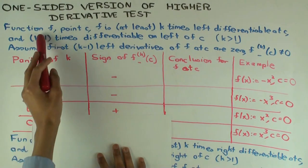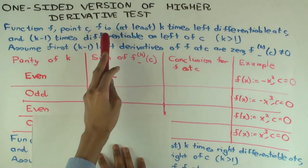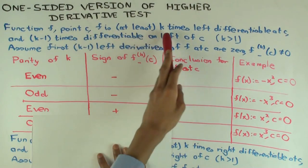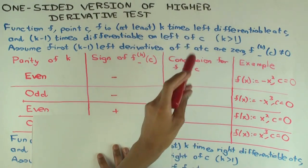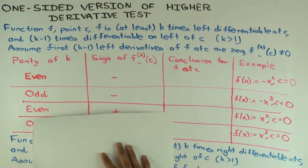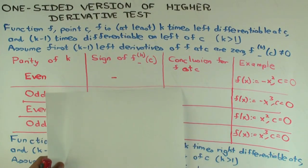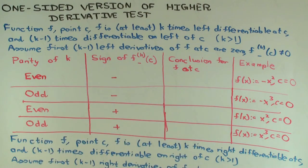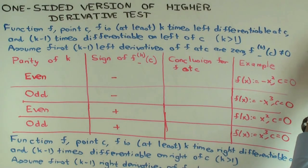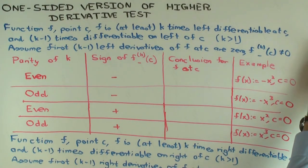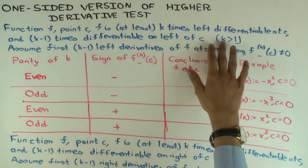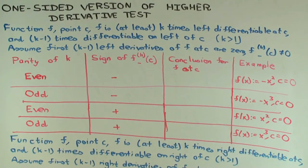Here's how it goes: you have a function, you have a point in the domain, the function is at least k times left differentiable at the point, and k minus 1 times differentiable on the left of the point — so it's two-sided differentiable k minus 1 times for points on the immediate left of c — and k is at least 2.